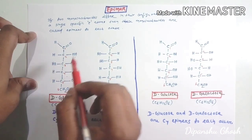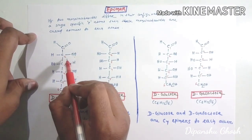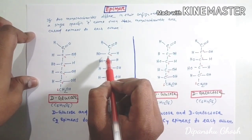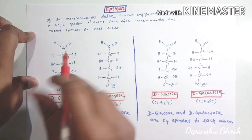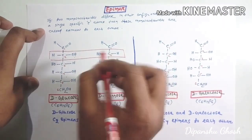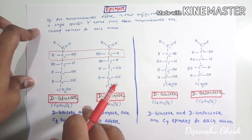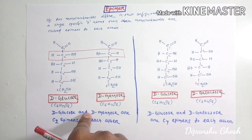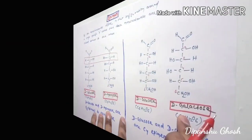In D-glucose, the second carbon is attached to hydrogen towards the left side and the hydroxyl group towards the right side. But in D-mannose, the hydroxyl group is attached to the left side and the hydrogen is attached towards the right side of the second carbon. Since these two monosaccharides differ only at carbon number 2, they are called C2 epimers.